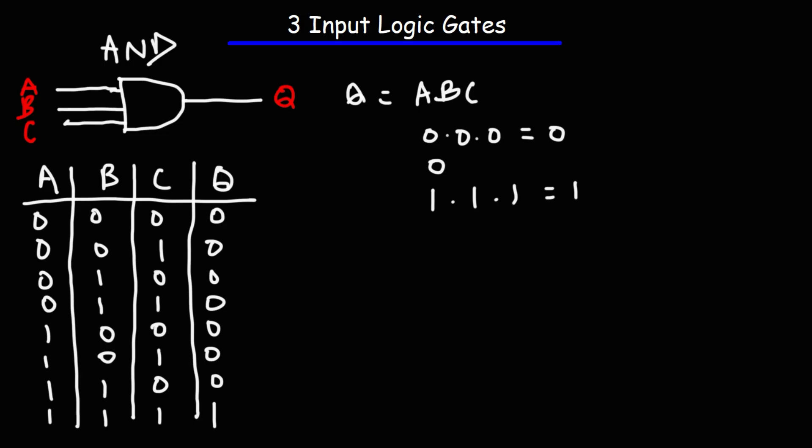So that's the truth table for the AND gate. A, B, and C all have to be active in order to get an output of 1. If not, everything else will be a 0.